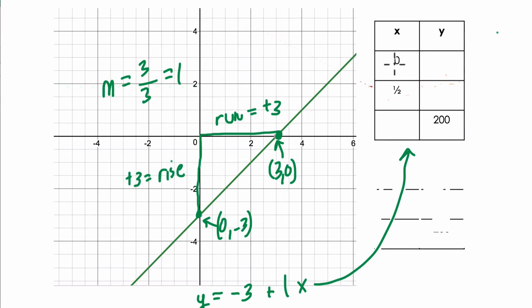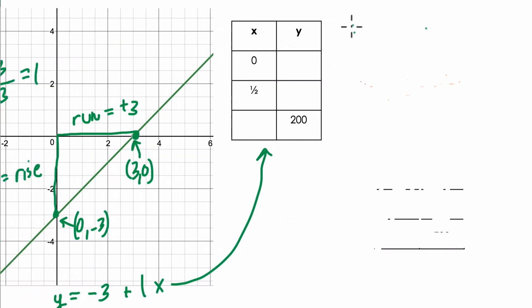When x is 0, that would mean, let me scroll over so you can see this, using our equation, y equals negative 3 plus 1x. So if x is 0, as this is saying right here, the point where x is 0, what does y equal? Well, y equals negative 3 plus 1 times 0. And that's negative 3 plus 0, just negative 3. That's our answer. So this is saying when x is 0, the y value is negative 3. You can see it right here on the graph. This point right here is the point 0, negative 3, which is the y-intercept.